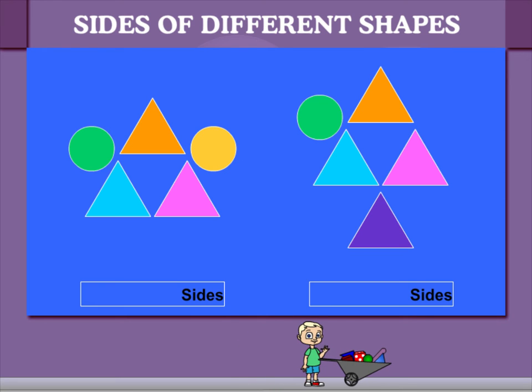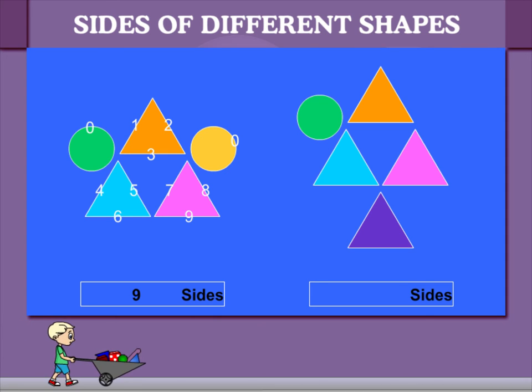Let's count the sides in these two groups. 0, 1, 2, 3, 0, 4, 5, 6, 7, 8, 9. These shapes have nine sides.